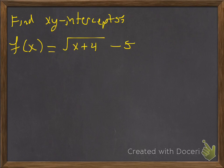Alright, we're going to find the x and y intercepts of this radical function here, the square root of x plus 4 minus 5.